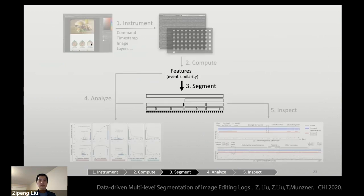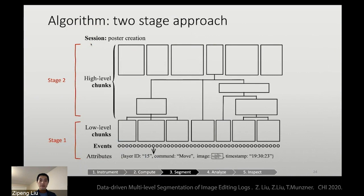After computing these features, we're going to segment a sequence into chunks. So we are using a two-stage approach, where stage one is to construct low-level chunks from these events, and stage two is to group these low-level chunks into high-level chunks.